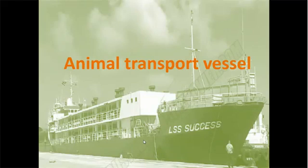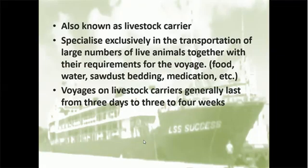The next vessel I'm going to share with you is a specialized vessel called the animal transporter, also known as a livestock carrier. The purpose of an animal transporter is exclusively to transport large numbers of live animals from a certain point — for example, from Fremantle, Western Australia to Pasir Gudang, Johor. The voyage may take about five days. As with human beings, animals need to be fed, so when we are sending live animals on this vessel, we also need to give them proper meals and water.